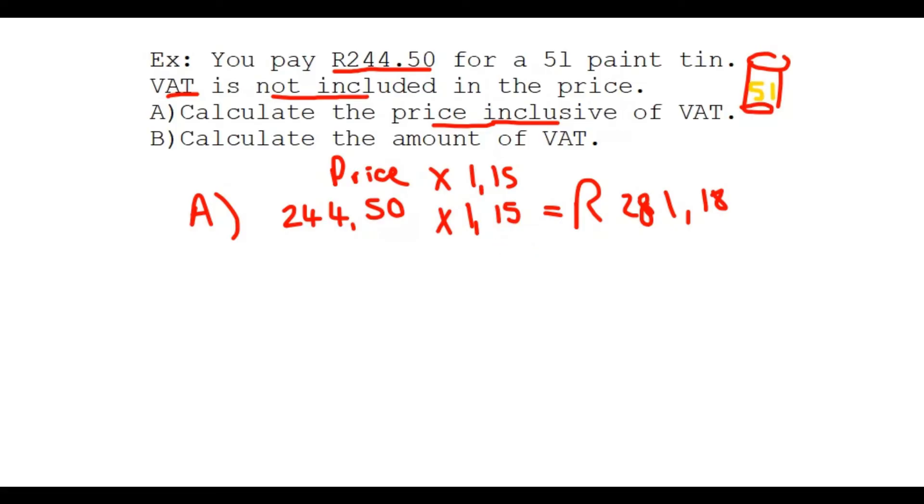Let's look at question B: calculate the amount of VAT. If ever they ask just for the amount of VAT, you take your price and you just times it by 15%. You just want to know what is 15% of the price. R244.50 times 15 over 100, and you get your answer: R36.68. Easy.